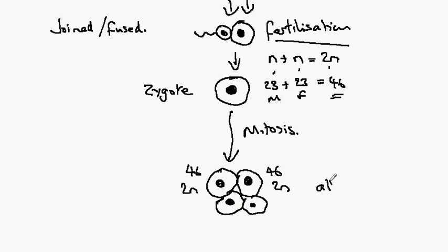So all cells contain the 2n diploid number of chromosomes, and when we have sufficient cells, the structure would be called an embryo.